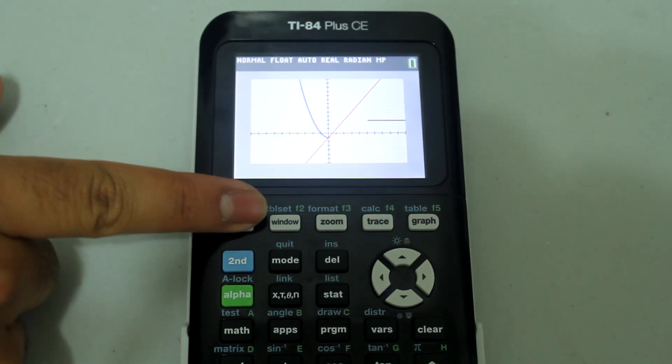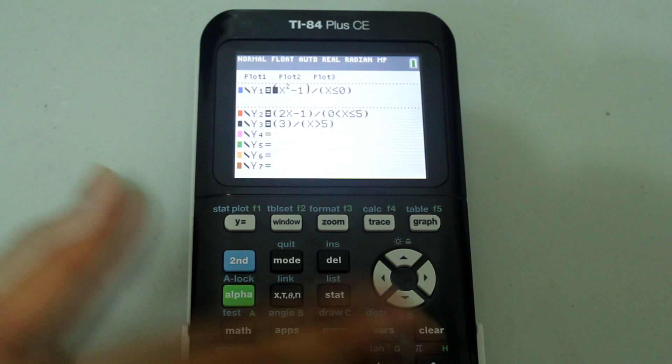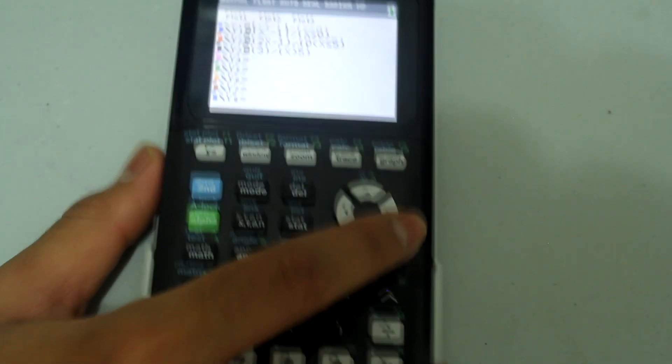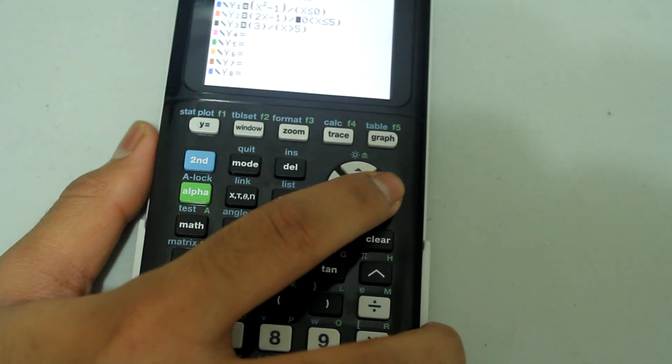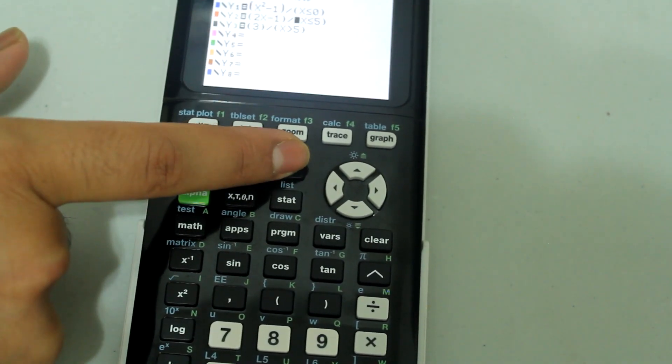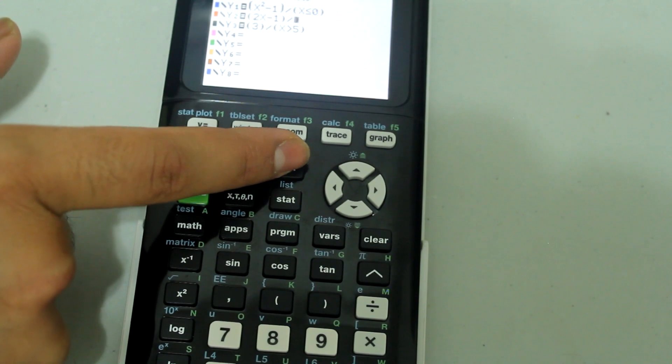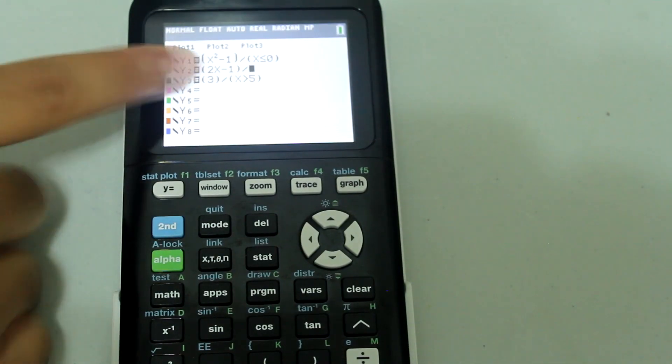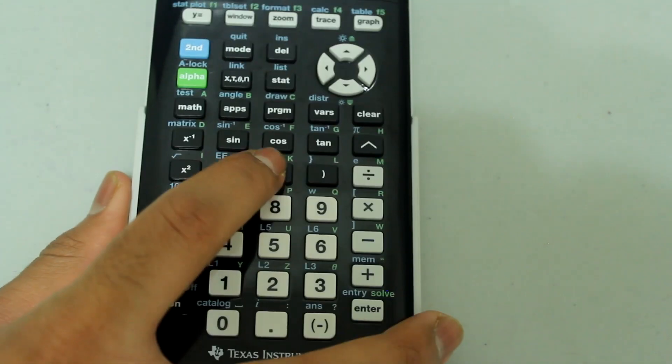I'm going to press y equals, arrow down to the second equation, and then I'm going to arrow over to this parenthesis, press delete until there is nothing left after the division sign.